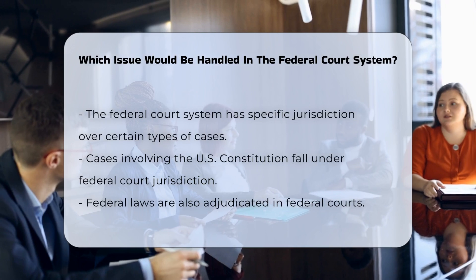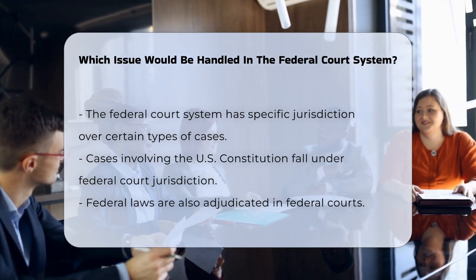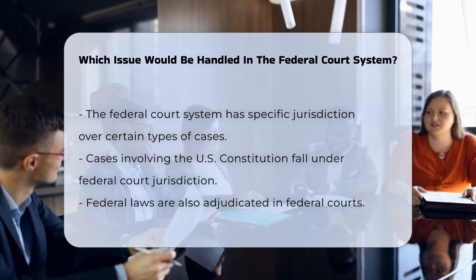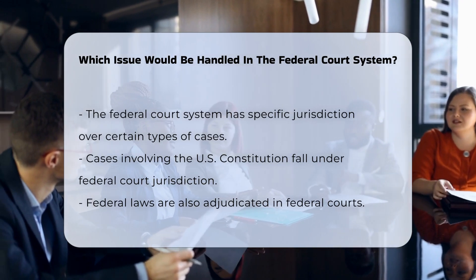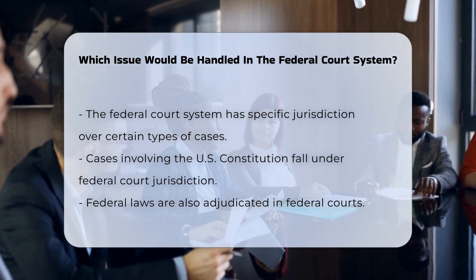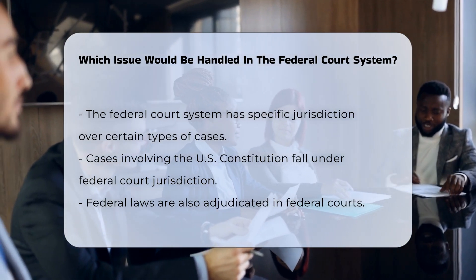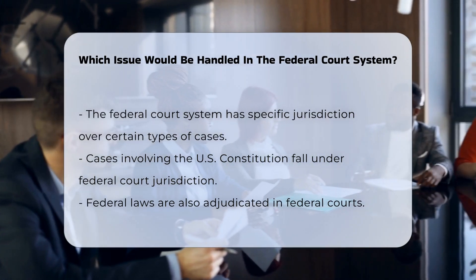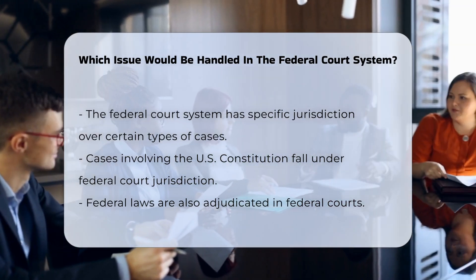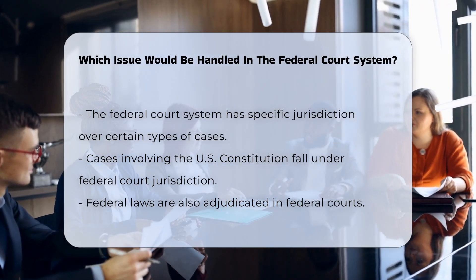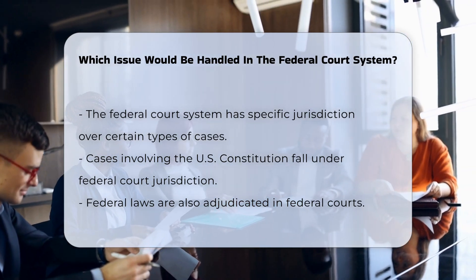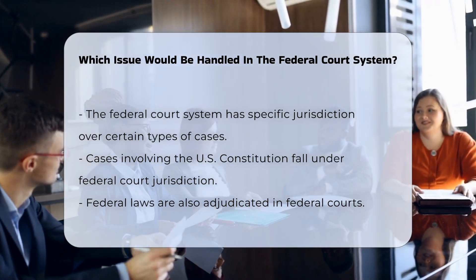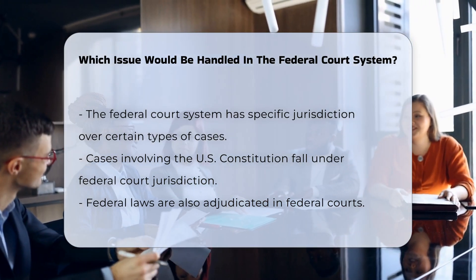The federal court system has specific jurisdiction over certain types of cases. These include disputes involving the U.S. Constitution, federal laws, and controversies between states or between the U.S. government and foreign governments. For instance, cases that involve federal government programs, such as Social Security claims or challenges to actions taken by federal agencies, are heard in federal court.